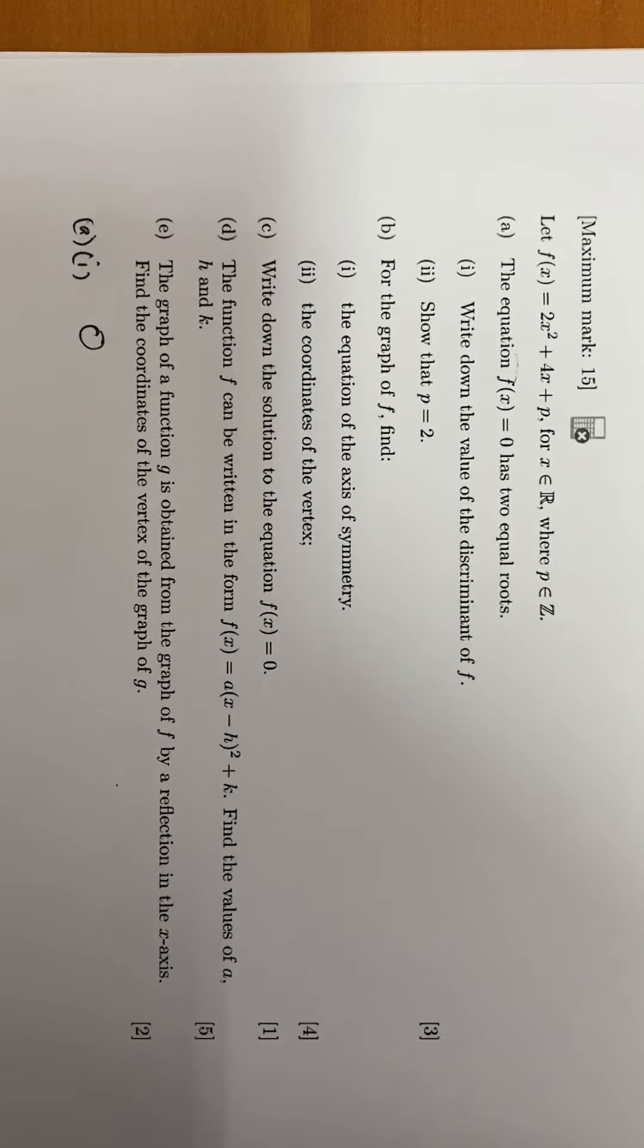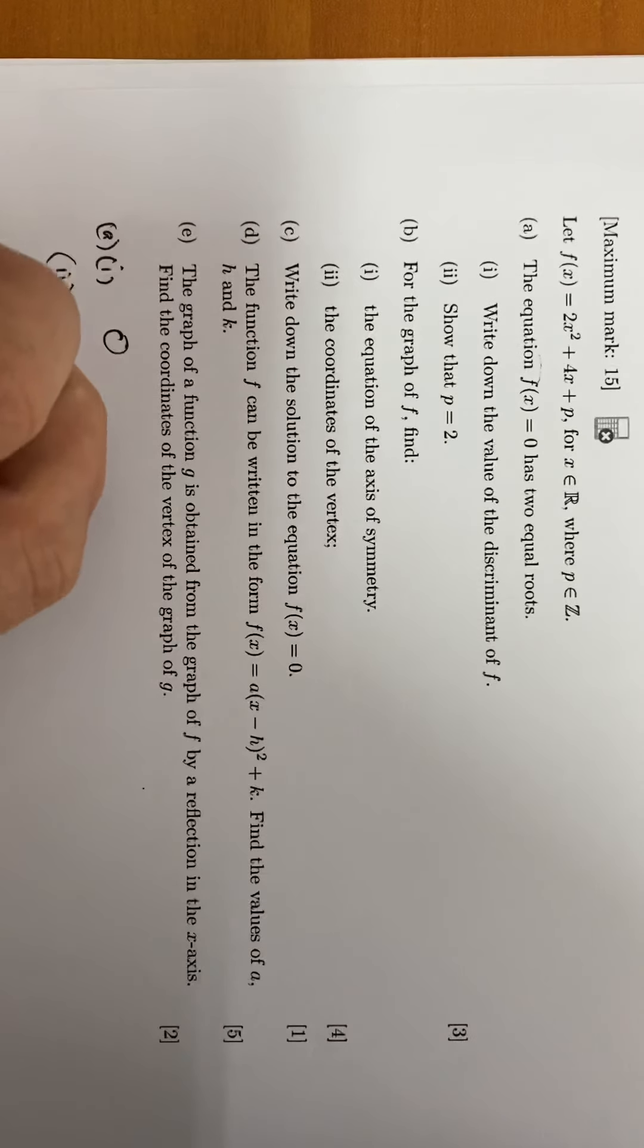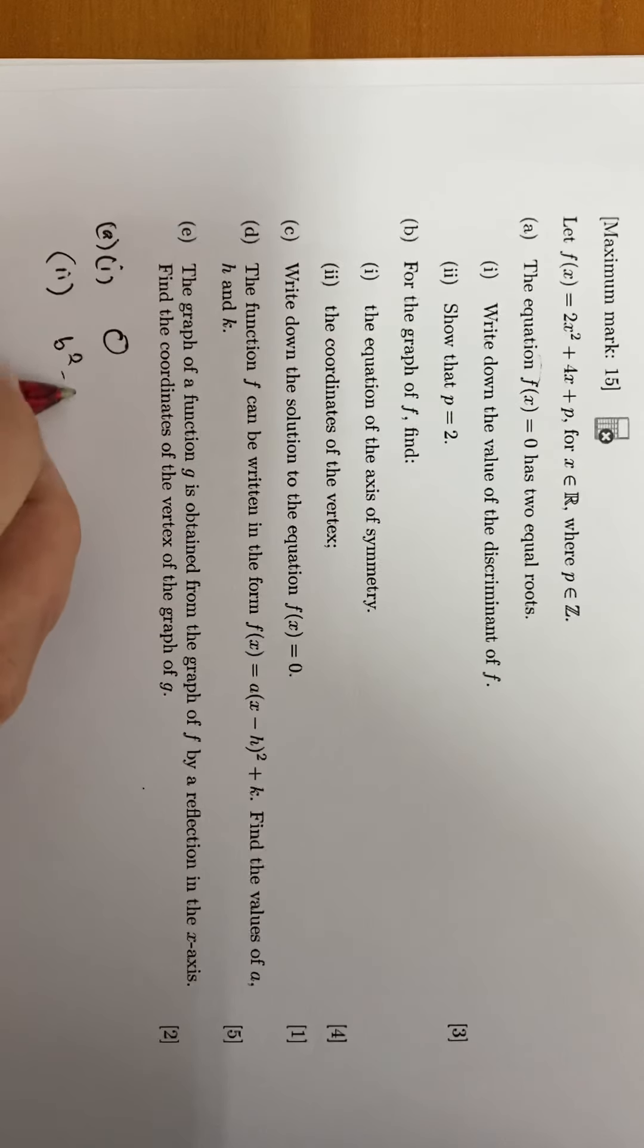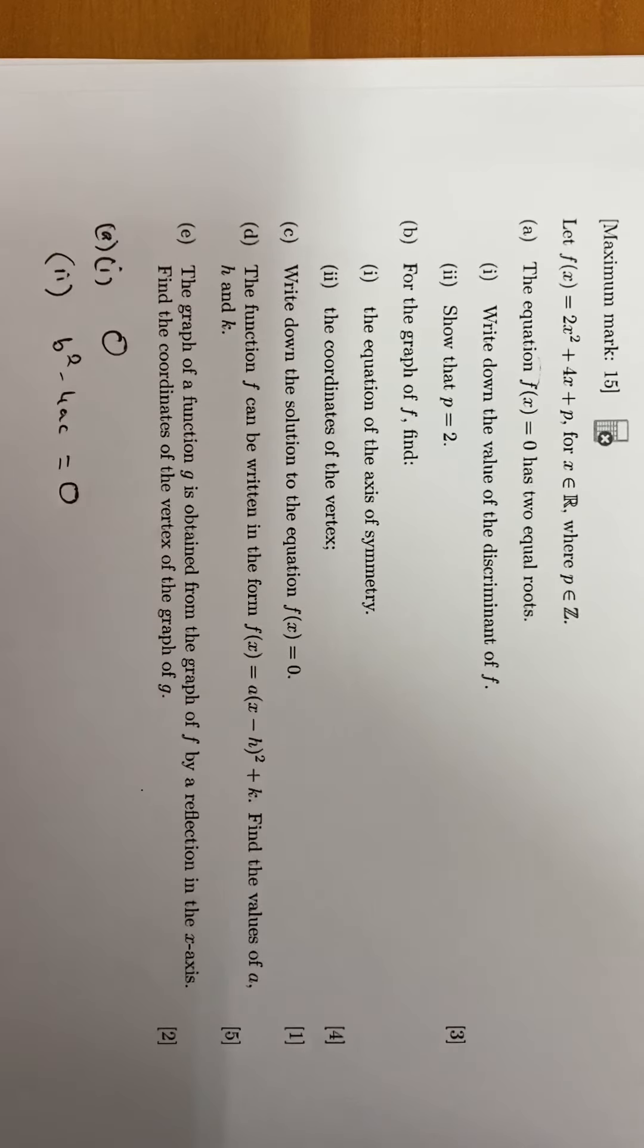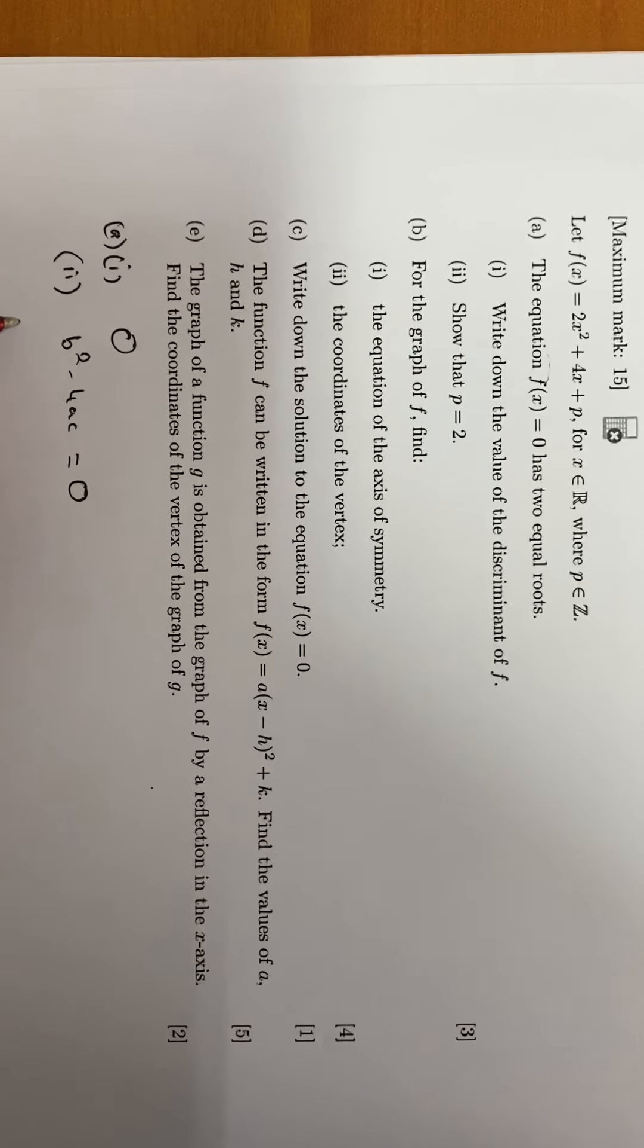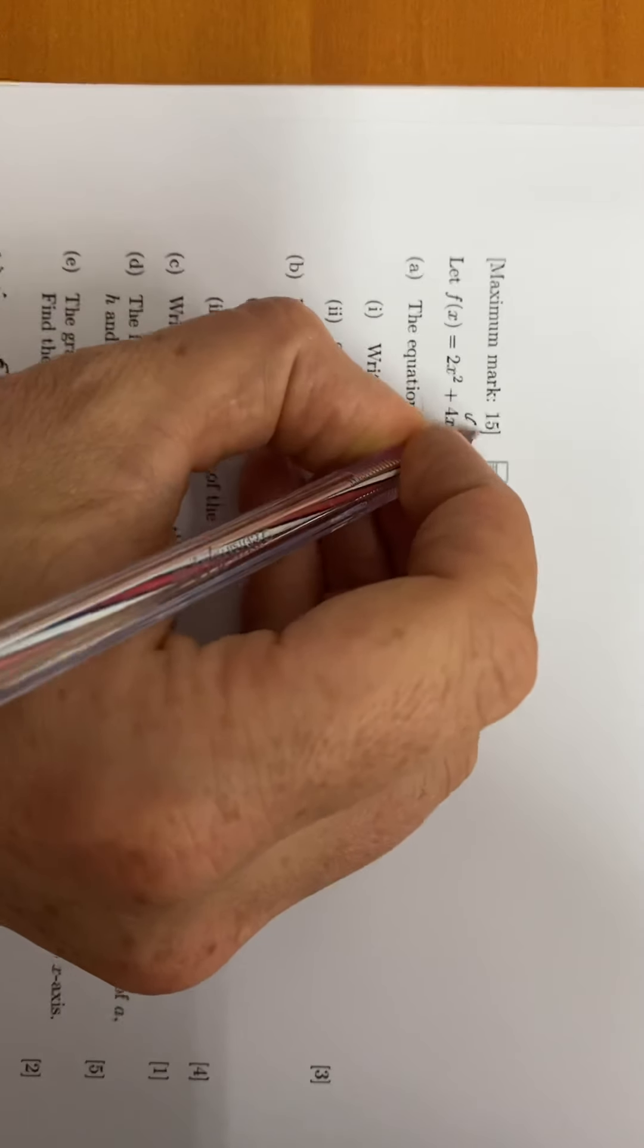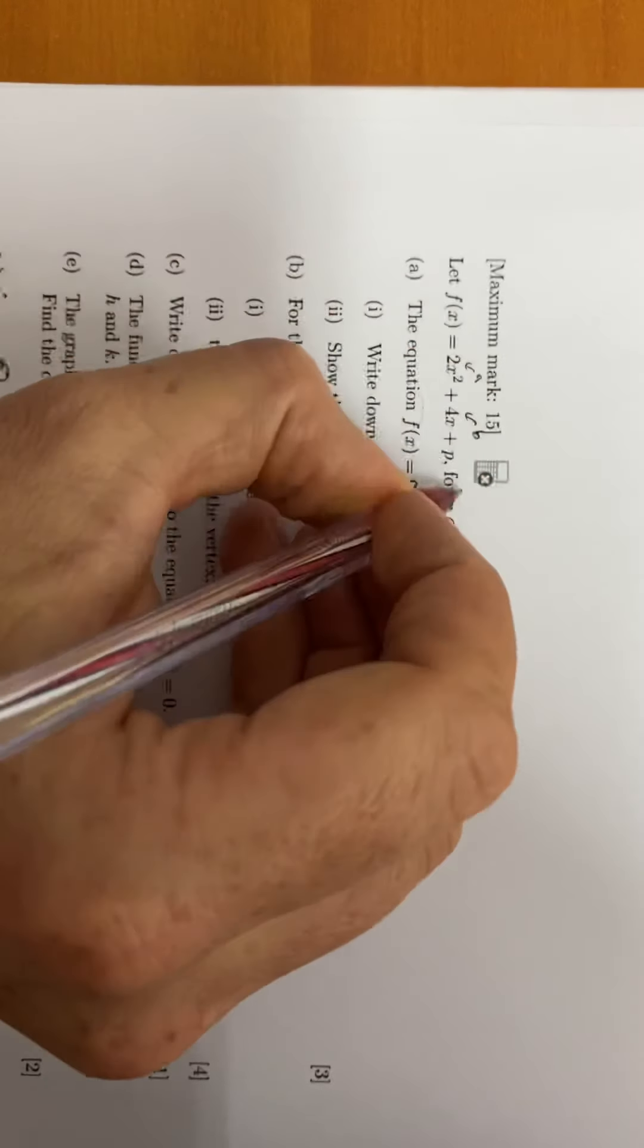Part two, show that p is equal to two. We need to use b squared minus 4ac, the discriminant, and we know it equals zero from the first part. b squared, so in this one, the plus 4 is b, 2 is a, and c is p.